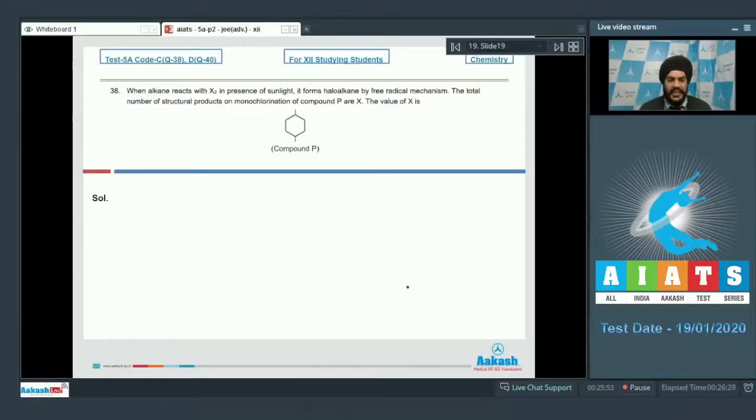Let us look at the next section. This section contains three questions; the answers are in the form of double-digit integers. Question 38: When alkane reacts with X2 in presence of sunlight, it forms haloalkane by free radical mechanism. The total number of structural products on monochlorination of compound P are x. We have to comment on the value of x.